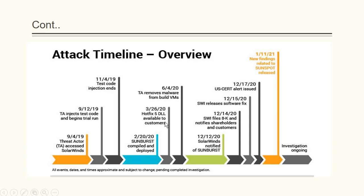On 26th March, Hotfix 5 DLL was made available to customers, meaning every customer that updated their Orion platform also executed this DLL file. The threat actor then removed the malware from build VMs. On 12th December 2020, SolarWinds was notified of Sunburst. On 14th December, an 8-K filing notified shareholders and customers. On 15th December, they released software to fix it, and on 17th December, US-CERT issued an alert.